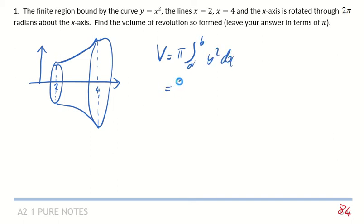Just write out the formula since it's new to us, so that's going to be pi in this case. My limits are 2 and 4, and it's x squared. So if you square, x squared squared I should say, so it's going to be x to the 4 dx.